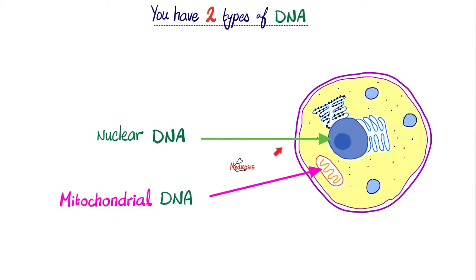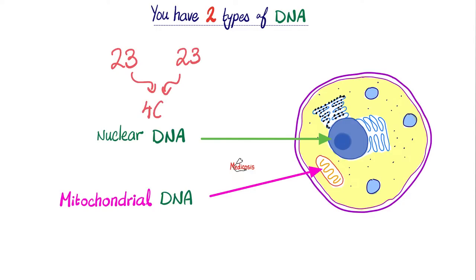Where did my nuclear DNA come from? Half of it from mom and half of it from dad. The ovum had 23 chromosomes and the sperm had 23 chromosomes, so now your nucleus has 46 chromosomes — half from mom and half from dad. Where did I get the mitochondrial DNA from? You got 100% of it from your mother alone, because your dad left his tail outside. I'll explain shortly.